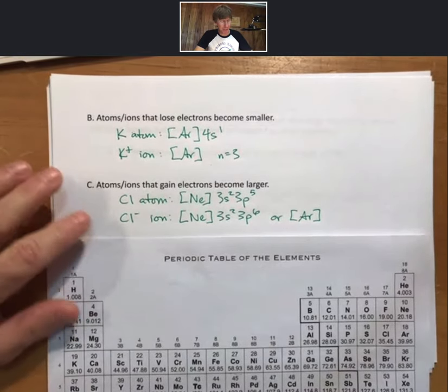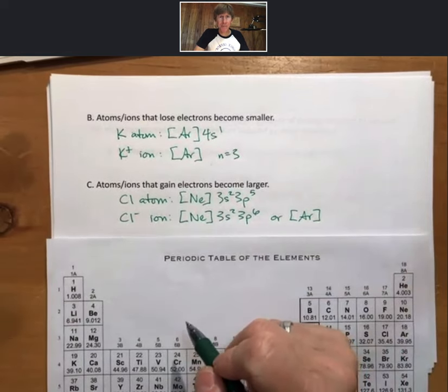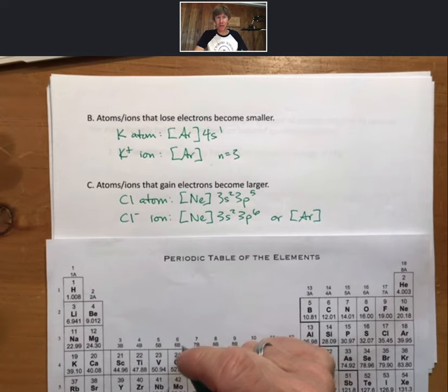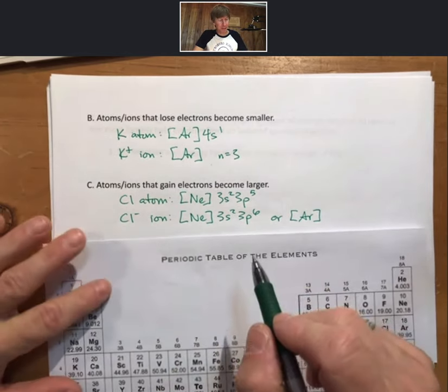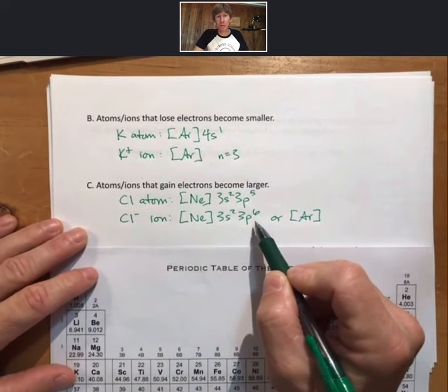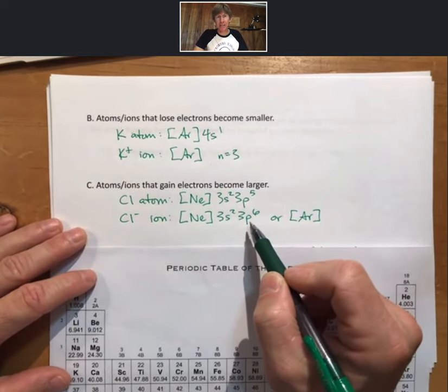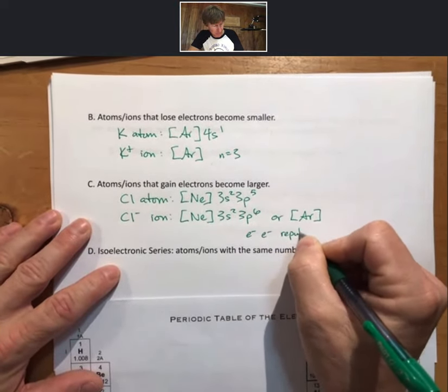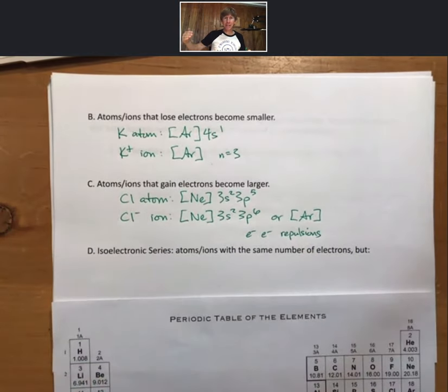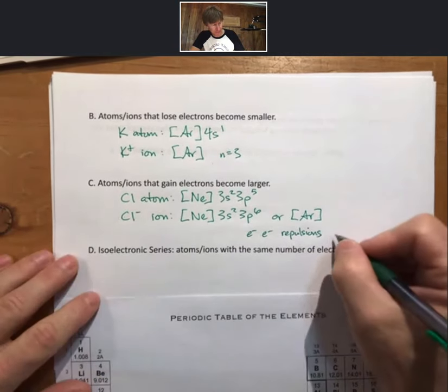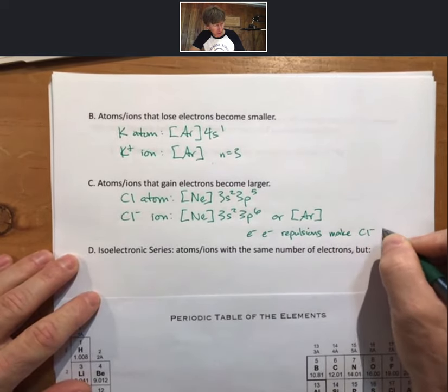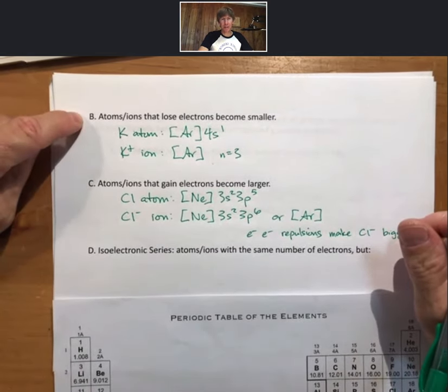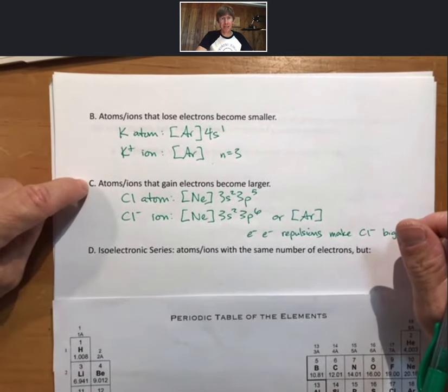Now, what I wanted to point out about this is you're filling the same sublevel. You're filling an orbital that already has an electron in it. What makes it larger? This is a little bit more subtle, and it goes to the fact that you're putting an electron in an orbital that already has an electron that will experience electron-electron repulsions, which will make it bigger, make Cl- bigger. Okay. So, trends here. Lose electrons become smaller. Gain electrons become larger.